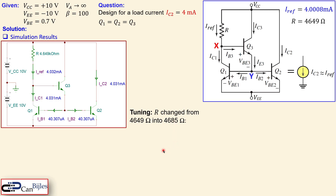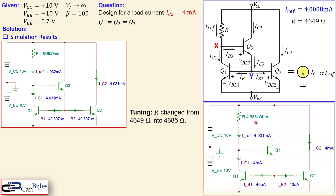After tuning R to 4685 ohms, the simulation confirms IC2 is exactly 4 milliamps, and IC1 matches IC2 as expected. IB1 equals IB2 at 40 microamps, which is IC2 divided by beta of 100. This verifies our analysis and confirms we have achieved our design goal.